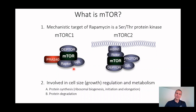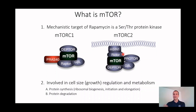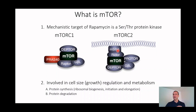In mTOR complex 1 there's a specific important protein called raptor — named the rapamycin-sensitive partner of TOR — making this complex acutely rapamycin sensitive. In mTOR complex 2, instead of raptor you have rictor, which stands for the rapamycin-insensitive complex of TOR. This complex is initially insensitive to rapamycin, though it eventually becomes sensitive over time. mTOR complex 2 also contains mSin1, which is thought to localize the complex to membranes within the cell.